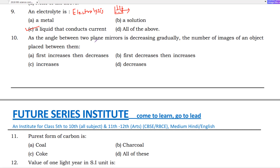As the angle between two plane mirrors decreases gradually, what will happen to the number of images? The number of images formula is: N = 360 / theta, where theta is the angle given. If the result is even, the number of images is (360/theta − 1); if the result is odd and the mirror is asymmetric, N = 360/theta.